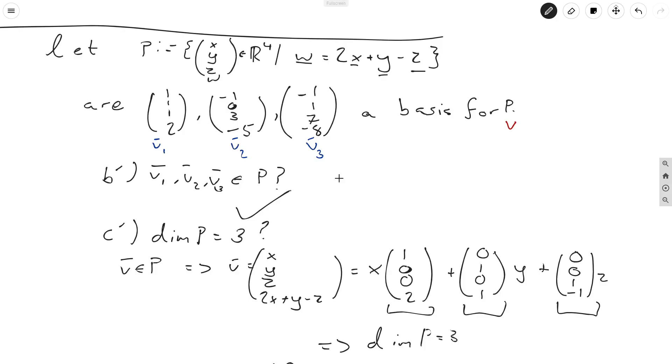So what do we get here? So 2 times the first is 2, plus y plus 1 is 3, minus 1 is 2. So v1 is definitely in the set. And v2, -2 plus 0 minus 3 gives us -5. And -2 plus 1 is -1, minus 7 is indeed -8. So v3 is also in the set. So yes, we do confirm v1, v2, and v3 are inside P.